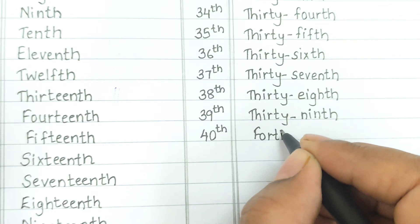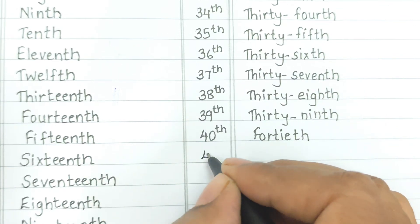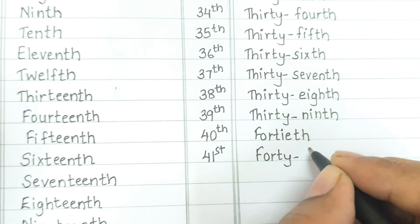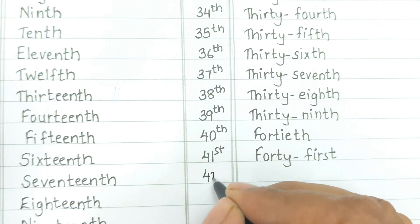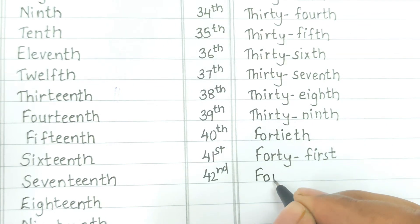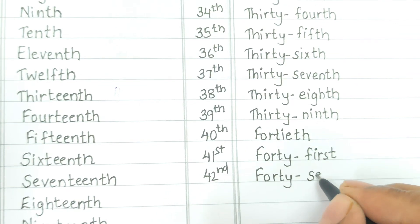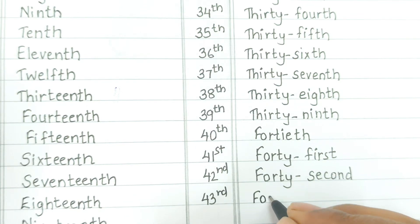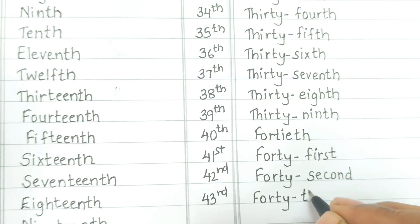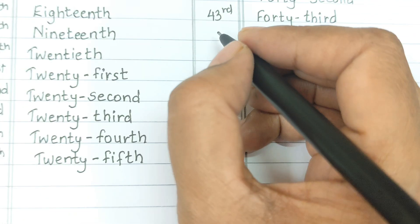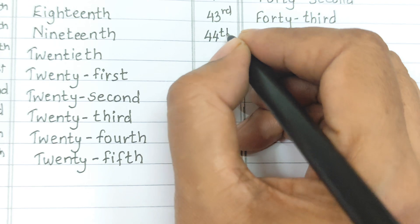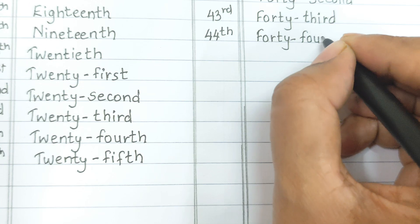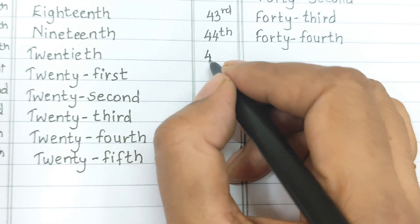Fortieth: F-O-R-T-I-E-T-H. Forty-first: F-O-R-T-Y-F-I-R-S-T. Forty-second: F-O-R-T-Y-S-E-C-O-N-D. Forty-third: F-O-R-T-Y-T-H-I-R-D. Forty-fourth: F-O-R-T-Y-F-O-U-R-T-H. Forty-fifth: F-O-R-T-Y-F-I-F-T-H.